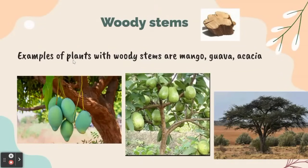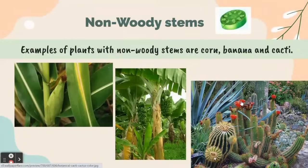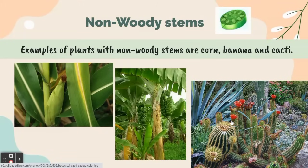Examples of plants with woody stems are mango, guava, and cassia. Examples of plants with non-woody stems are corn, banana, and cacti.